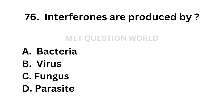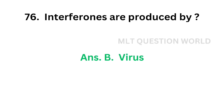Question number 76: Interferons are produced by — Option A: Bacteria, Option B: Virus, Option C: Fungus, Option D: Parasite. The correct answer is Option B, Virus. Interferons are produced by viruses.